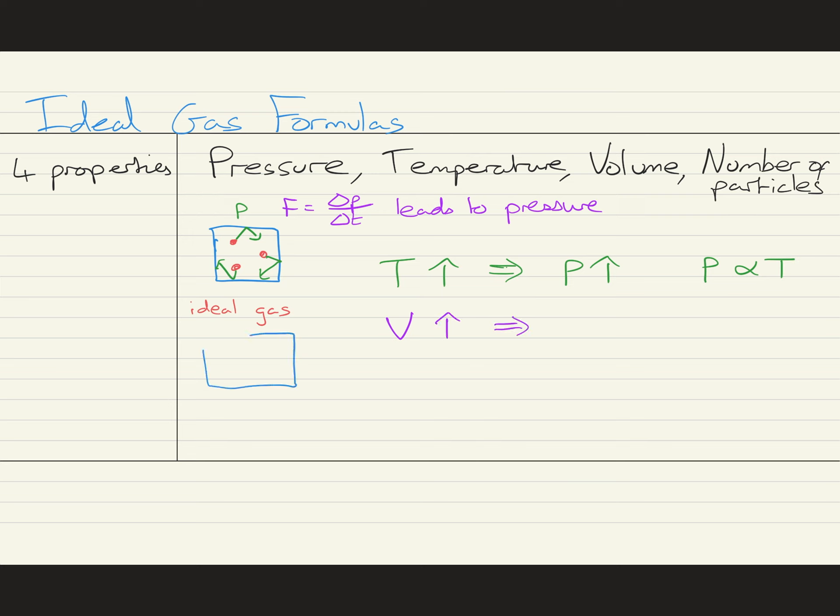If we increase the volume, the collisions become less frequent, so pressure goes down. P is proportional to 1 over V. If we increase the number of particles, there are more collisions per unit time, so the pressure goes up. P is proportional to N, the number of moles.